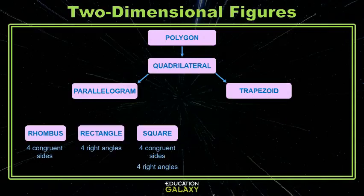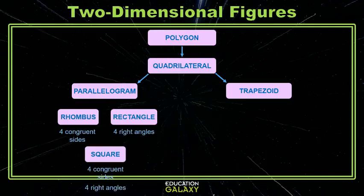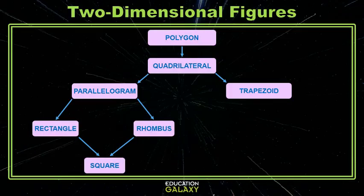Now from here, the rhombus and the rectangle are both parallelograms. The square is also a parallelogram, but it has things in common with both the rectangle and the rhombus. So I put the square under them, and then my beautiful little flowchart is complete.